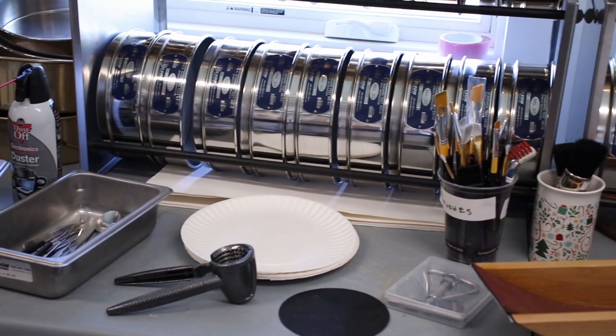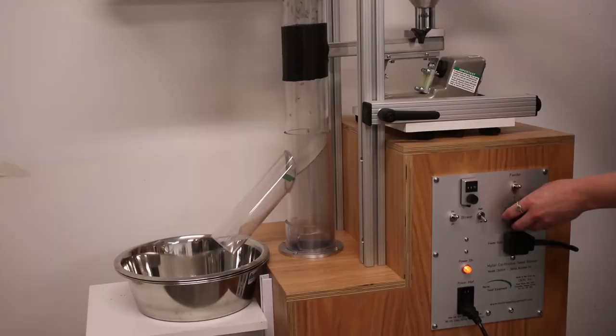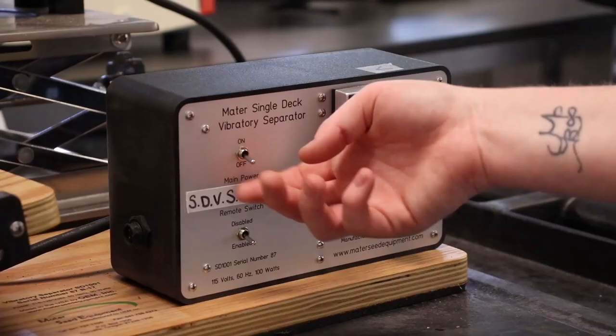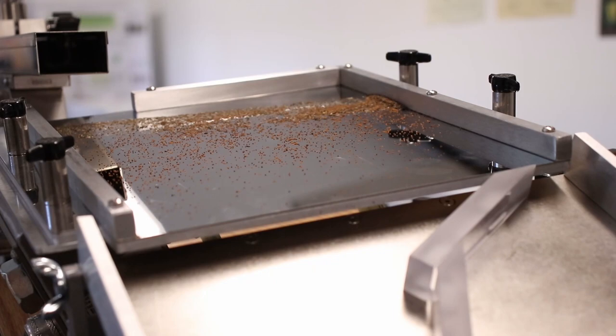Here are some of the many tools we use for cleaning seeds. This is the seed blower that uses air to separate seed from chaff. For tiny seed, we use a vibratory separator that removes small debris such as sand.